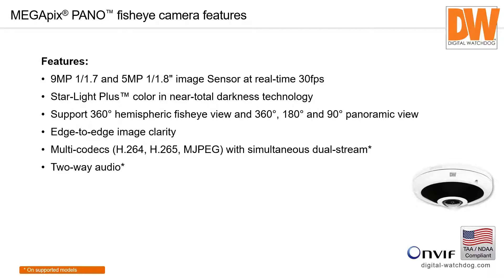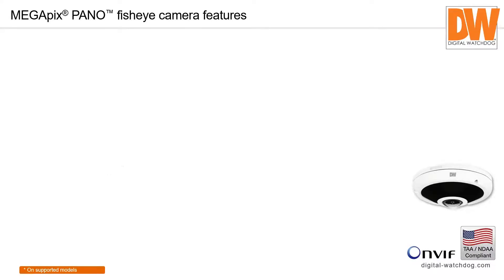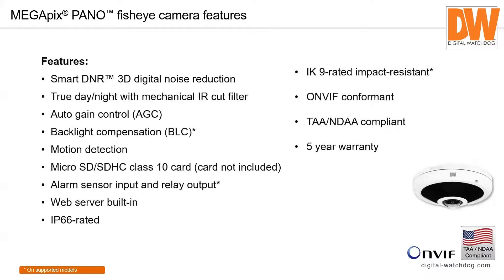Cameras are all multi-codec: H.264, H.265, and Motion JPEG, and they support two-way audio. Some of the key features include 3D DNR and backlight compensation. They also support a microSD card, so you can actually have backup recording in the camera.